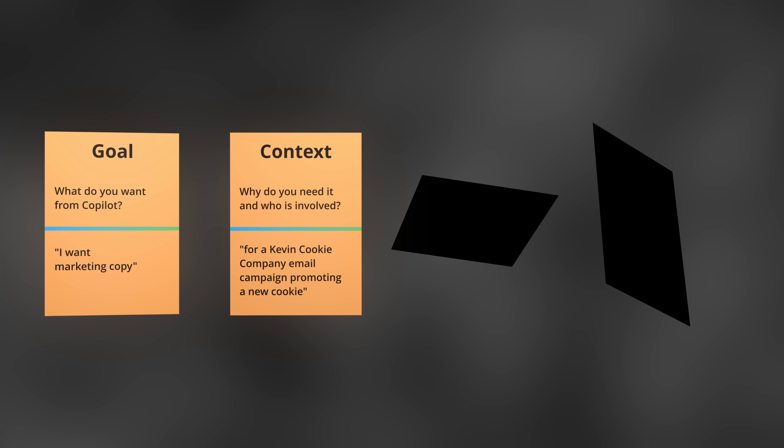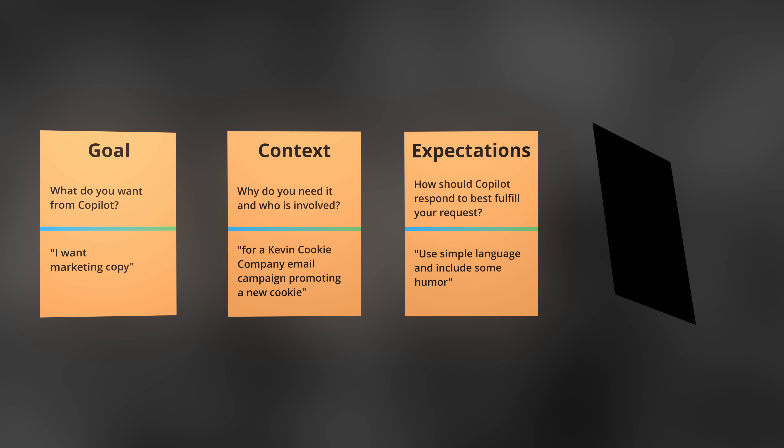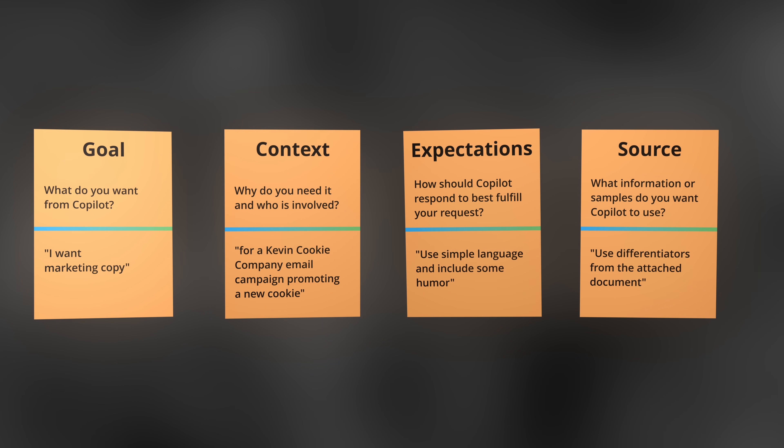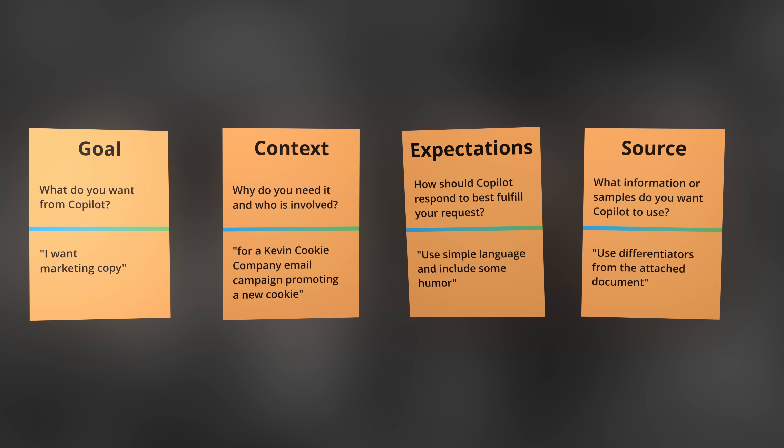As a recap, to write the best quality prompts in Copilot, make sure that you use the following structure with four parts: start with the goal, then add some context, set your expectations and instructions, and then include any source material that you want Copilot to reference as part of its response. You can enter a great prompt upfront with just one go, or you could go back and forth with Copilot a few times until you get what you want. There's really no right or wrong.